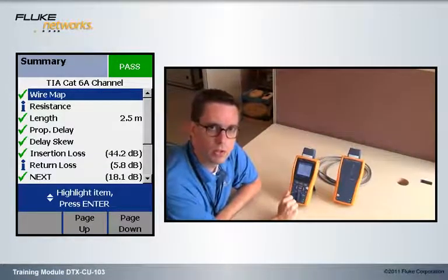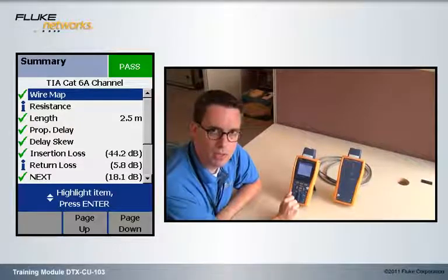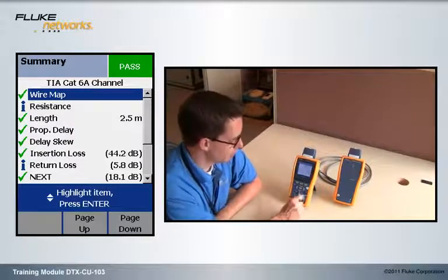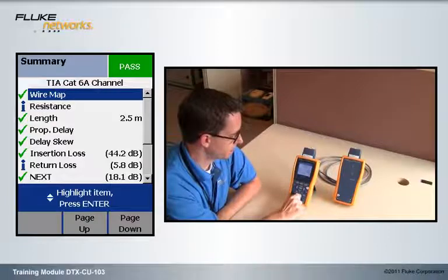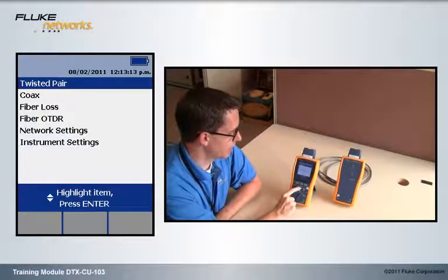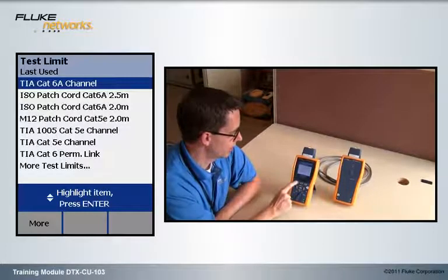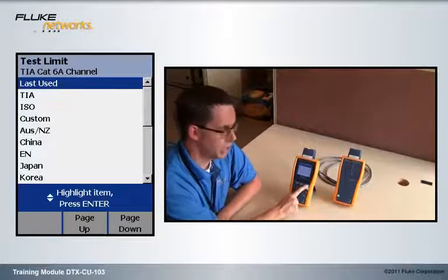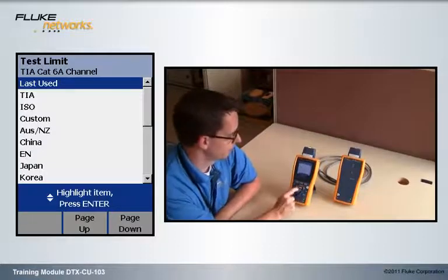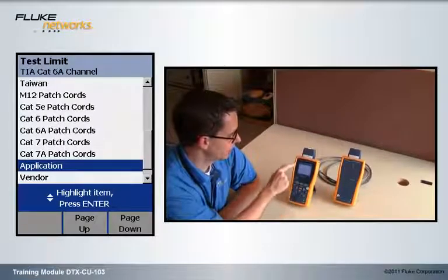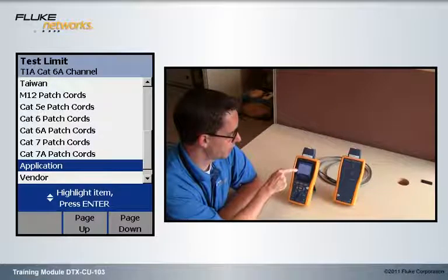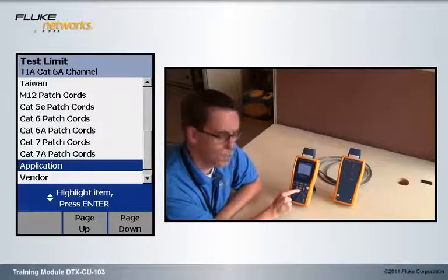Okay, if you saw the M12 patch cord testing video, you know what's going to happen next. We're going to change the test limit, and with twisted pair highlighted, we can hit the Enter key, and Enter again, F1 more, and we're going to cheat and go page down. And here we see M12, 5E, 6 and 6A. I want 6A.